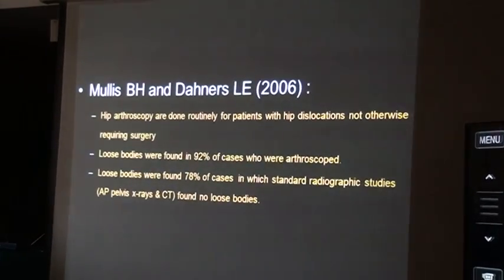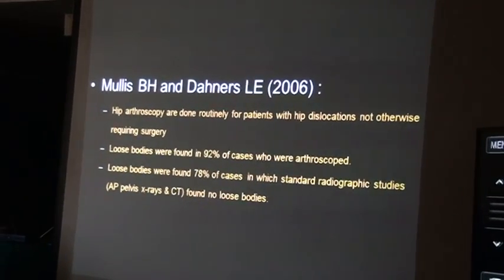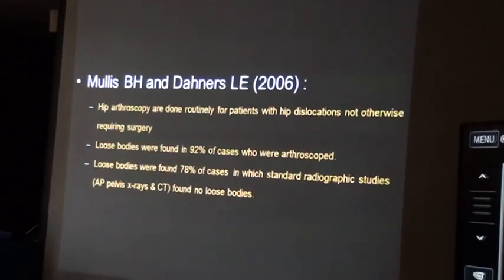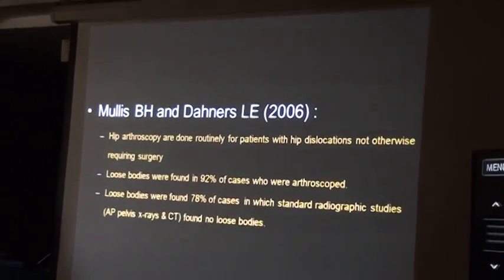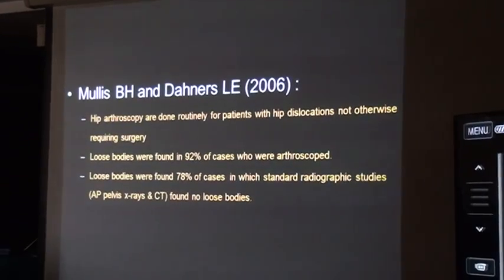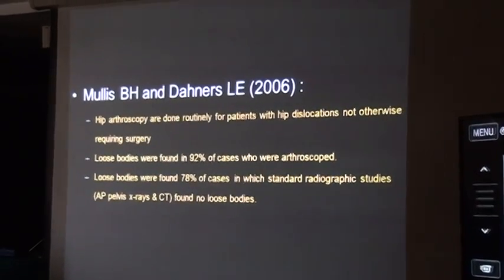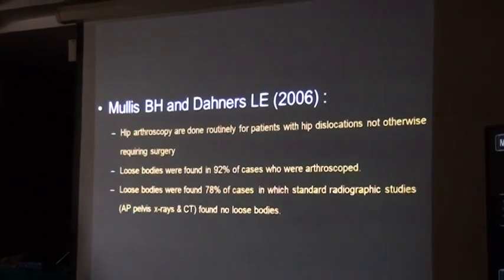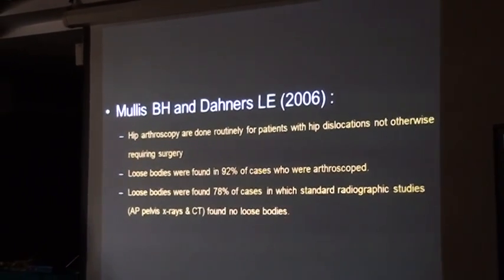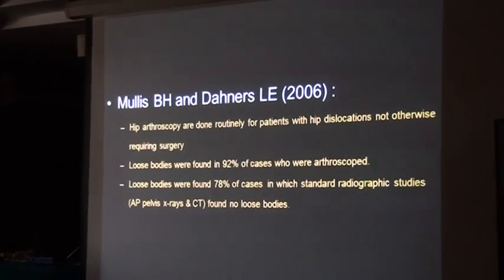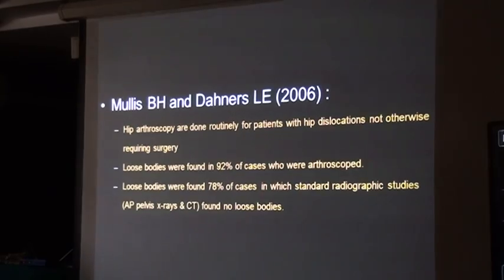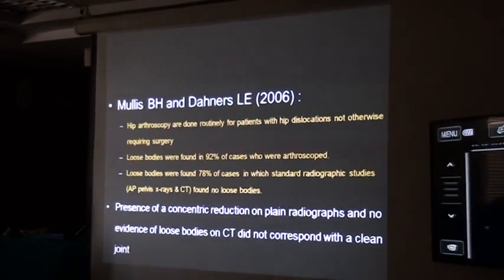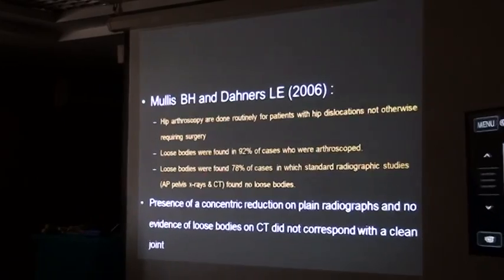Morris in 2026 found that hip arthroscopy done routinely for all patients with hip dislocation not otherwise requiring open surgery — not with fracture — showed loose bodies in 92% of cases who underwent arthroscopy. This series included 77 patients; loose bodies were found in 78 cases in which standard radiographic studies and CT did not confirm loose bodies inside the joint. Cases with concentric reduction on plain films had no evidence of loose bodies on CT, yet this did not correspond with a truly clear joint.